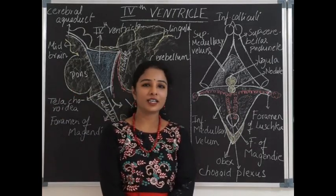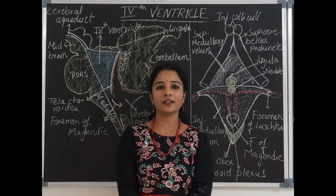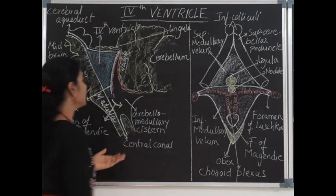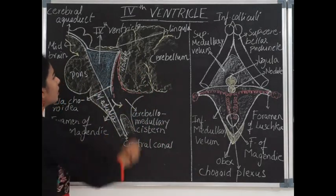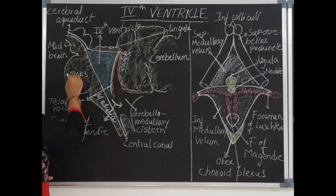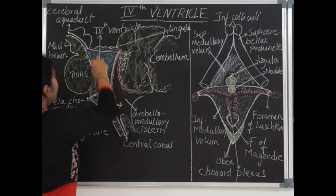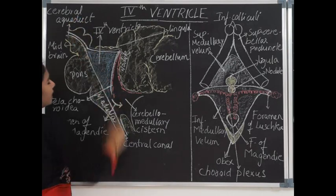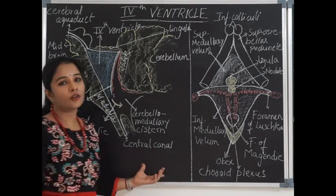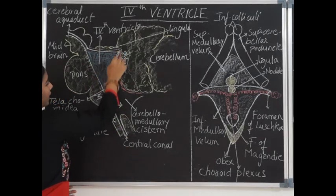Hello, I'm Dr. Rajita. Welcome to Anatomy Channel. Today we shall study about the fourth ventricle, which is the cavity of the hindbrain. The fourth ventricle is present within the posterior cranial fossa. Posteriorly it is related to the cerebellum, and anteriorly it is related to the pons and open part of medulla oblongata. The fourth ventricle communicates above with the cerebral aqueduct and below it continues as the central canal of medulla oblongata.